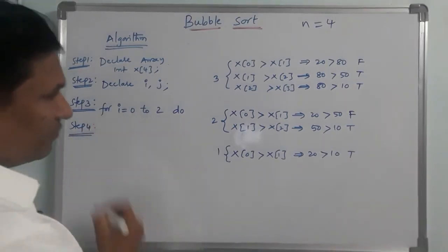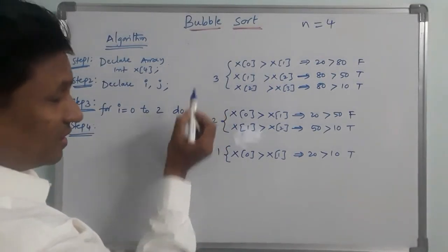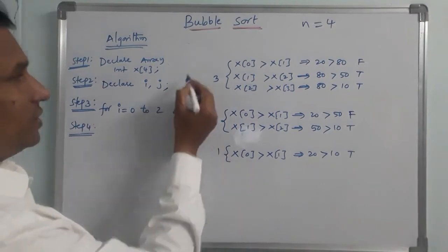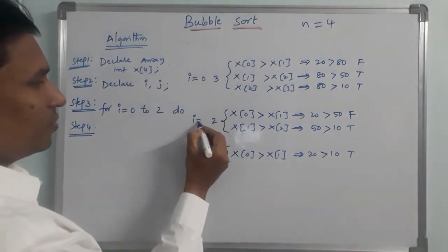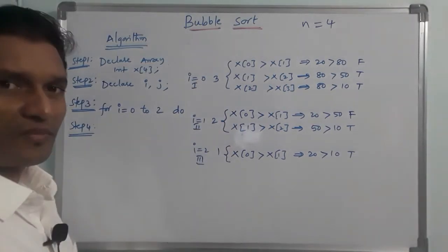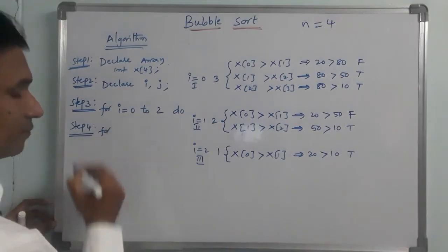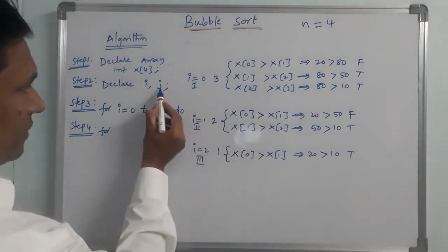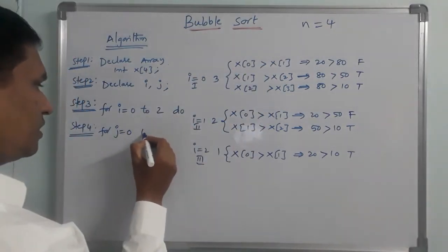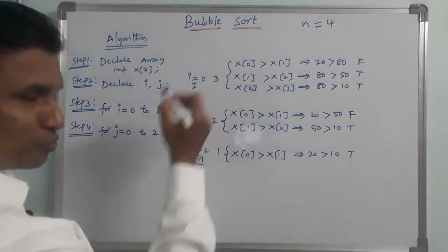The outer loop runs with i equal to 0 up to n minus 1 (which is 3). The inner loop for comparisons uses j. j starts at 0. This is the outer for loop controlling the number of passes, and the inner for loop handles comparisons.